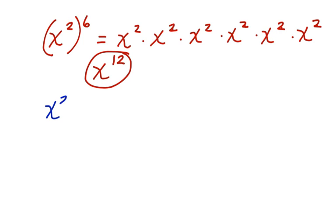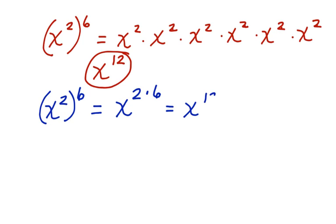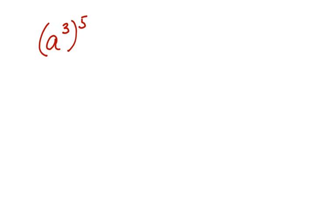But there's a shortcut. Look at this again: x squared to the sixth power. When I have something that looks like this, I can take x and multiply the two exponents, and I would still get x to the twelfth. Here's a cubed to the fifth power. Instead of writing a cubed out five times, I'm going to use my shortcut and multiply 3 times 5. My answer is a to the fifteenth power.